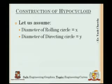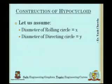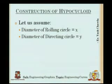For this also, we will assume two things. We will assume that we have the diameter of the rolling circle as well as the directing circle — these data will be given in the questions. So, diameter of the rolling circle as x and diameter of the directing circle as y.